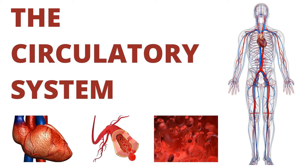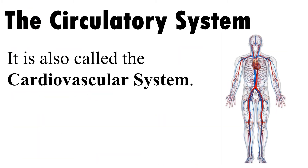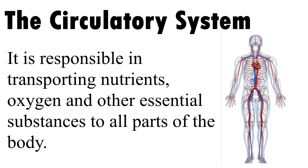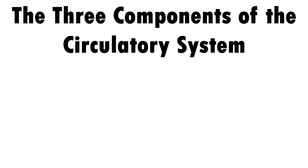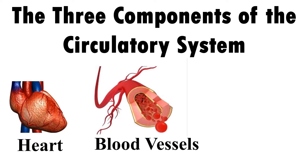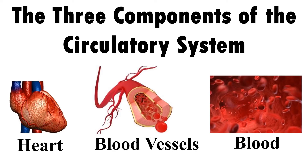The Circulatory System, also called the Cardiovascular System, is responsible for transporting nutrients, oxygen, and other essential substances to all parts of the body. It is also responsible for taking away carbon dioxide and other waste materials to the different excretory organs. There are three components of the Circulatory System: the Heart, the Blood Vessels, and the Blood.